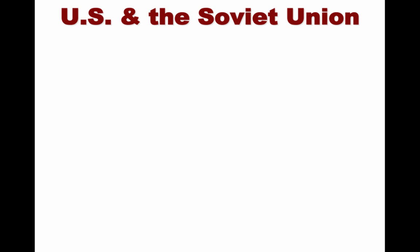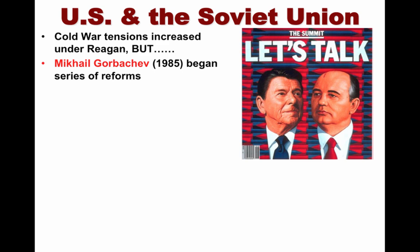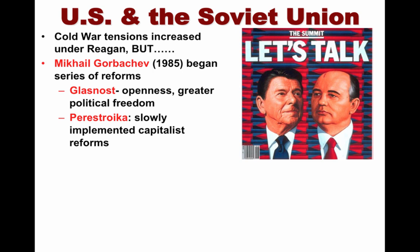The U.S. and the Soviet Union are a key part of this story. Cold War tensions increased under Reagan with all these different U.S. interventions, but his relationship with Gorbachev, who came to power in 1985, was hugely important. Gorbachev began a series of reforms — the Soviet economy was in awful shape and the arms race was costing them enormously. He introduced glasnost, meaning openness and greater political freedom, and perestroika, the slow implementation of capitalist reforms, letting free market ideas into Soviet society.